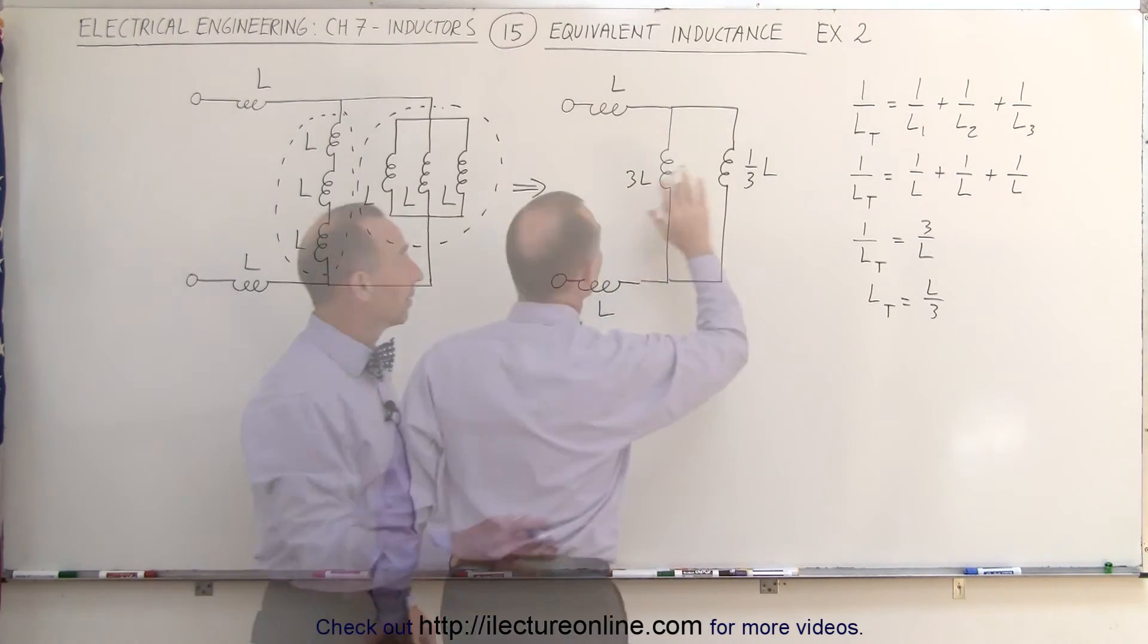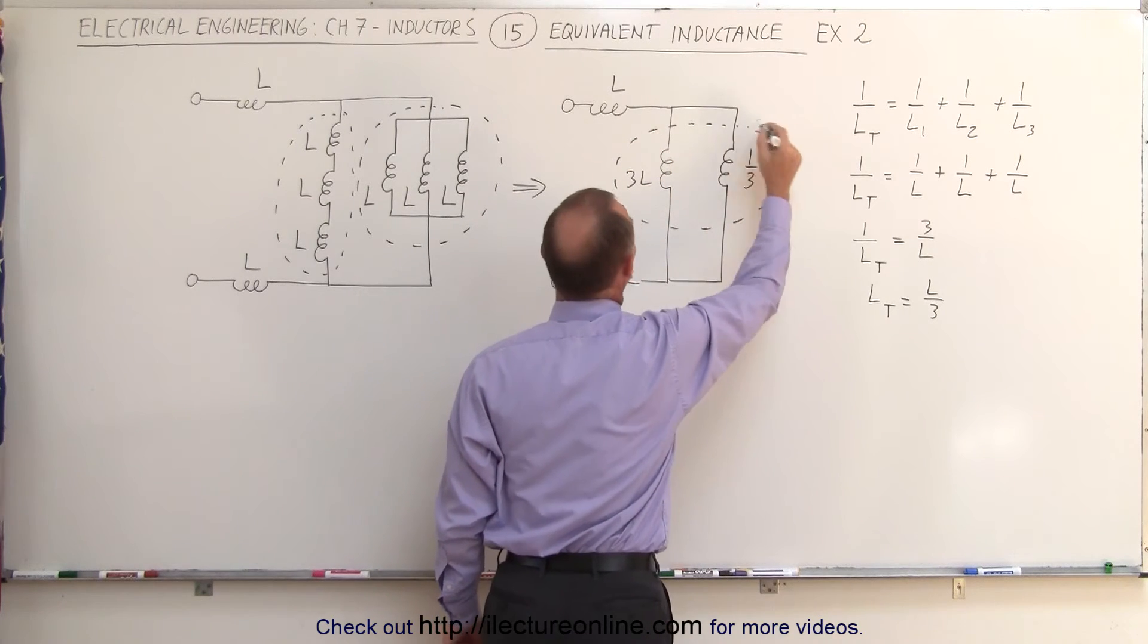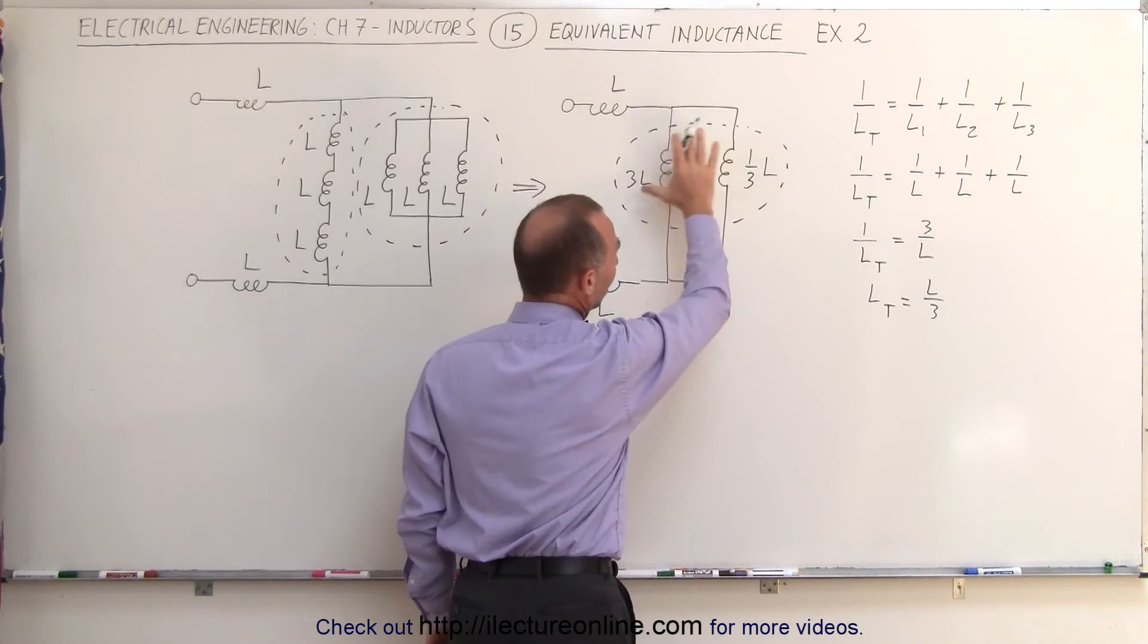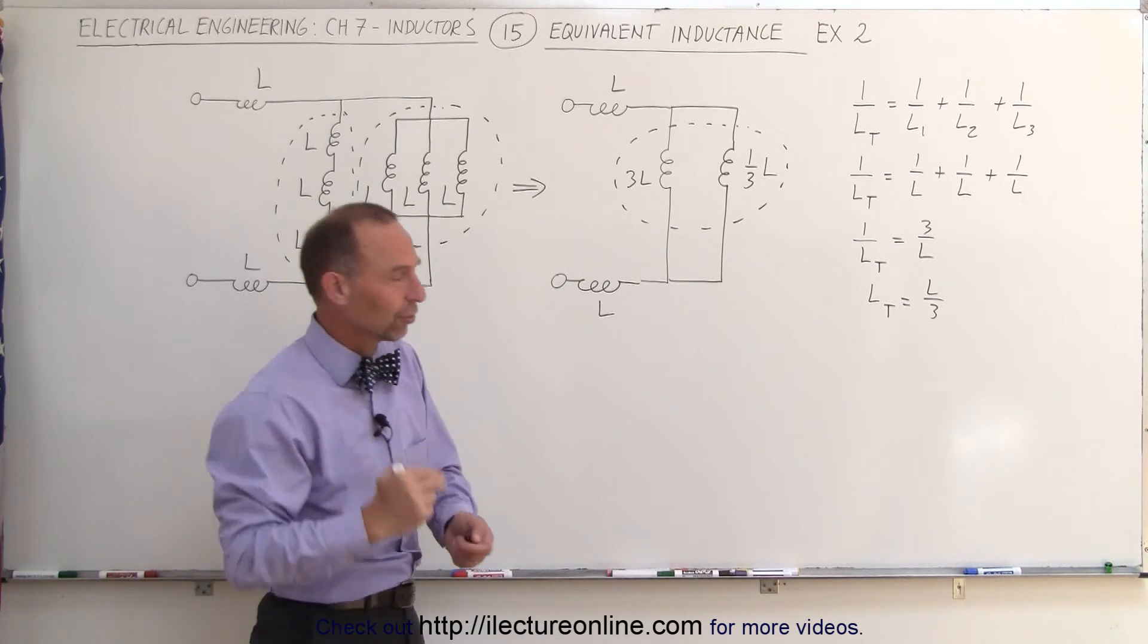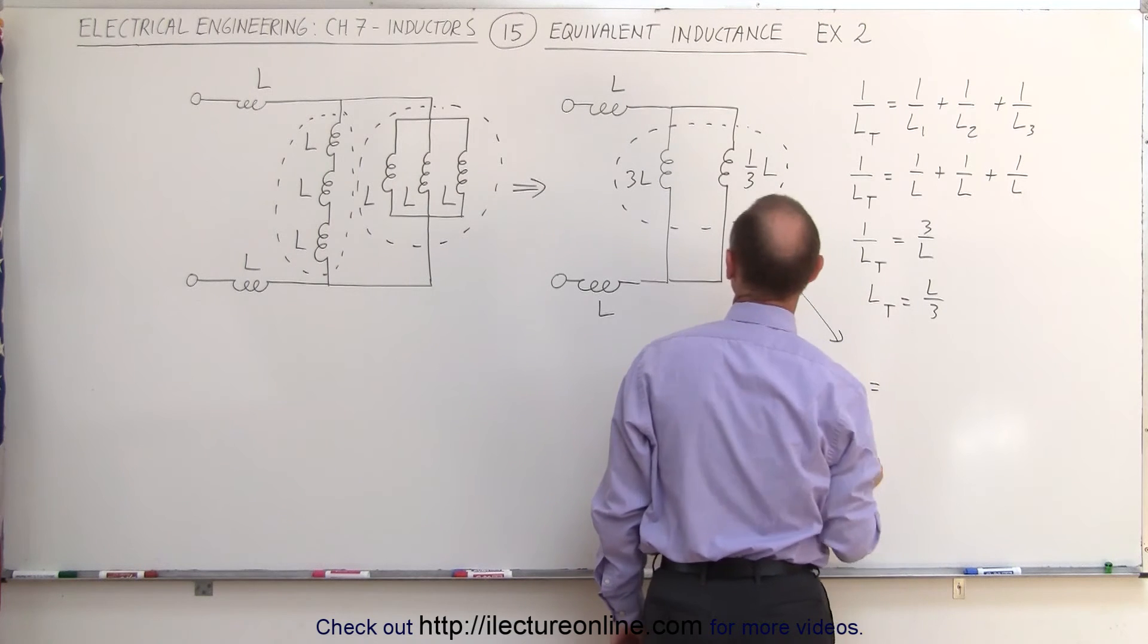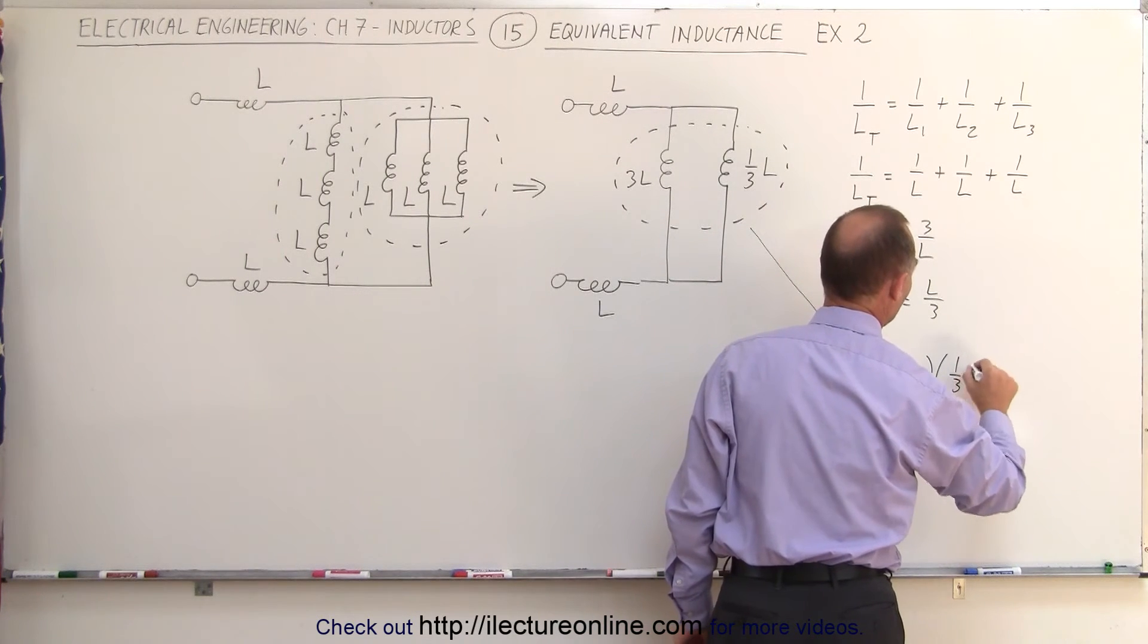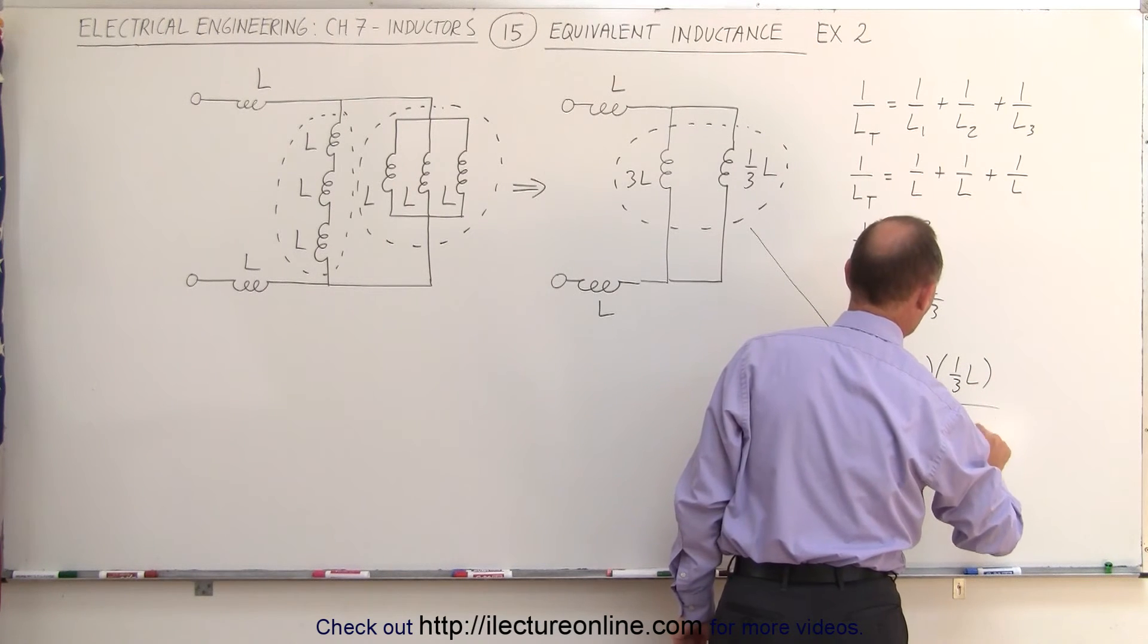Now, the next task is to combine these two. Again, we work from the end and work towards the connection here to the circuit. And so now we're going to combine these two together. They are in parallel, so we use the product over the sum rule, because there's only two of them. So for those two, we can say that L total is equal to the product 3L times one third L divided by the sum 3L plus a third L.